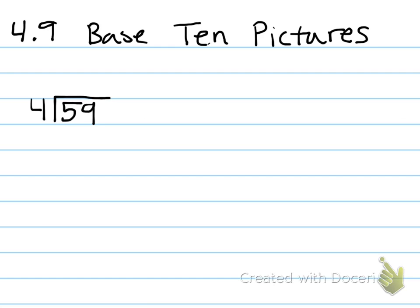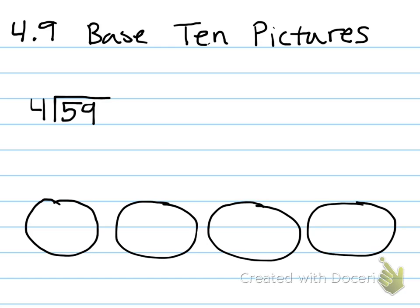4.9, using base 10 pictures. This is similar to the quick pictures using counters, only using the base 10. Same thing as before — the divisor is 4, so I'm going to make 4 circles. Now this time, I'm going to represent my dividend using base 10. There's a 10, a 10, a 10, a 10, a 10, a 10 — so that's 60. And I need 9 ones: 1, 2, 3, 4, 5, 6, 7, 8, 9. Now I'm going to distribute these evenly into my 4 groups.